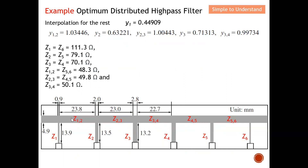The admittance of the first short circuit stub is 0.44909. To obtain the impedance, I divide 1 by this admittance and multiply by 50 (the normalization impedance), giving Z1 = 111.3 ohms. Similarly, for Z2: one divided by 0.63221 times 50 gives 79.1 ohms. For Z3: one divided by the corresponding admittance times 50 gives 70.1 ohms. The same process applies to the connecting lines.